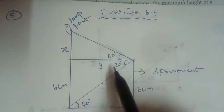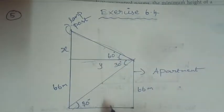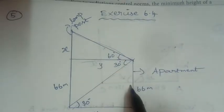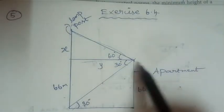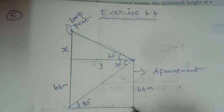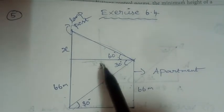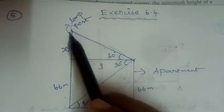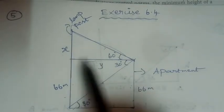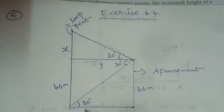If you know the distance y, then the remaining part of the lamppost above apartment level is x. We know the apartment height is 66 meters. So first we apply tan 60 degrees, then tan 30 degrees. For 60 degrees, the opposite is x and the adjacent is y.